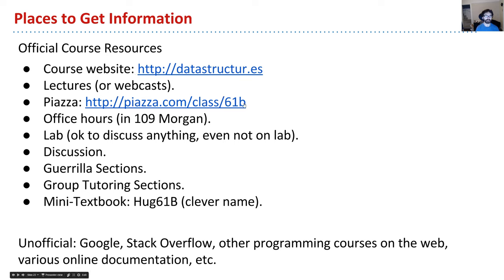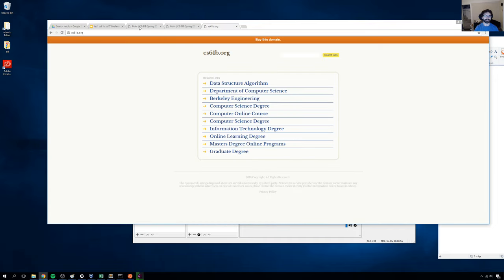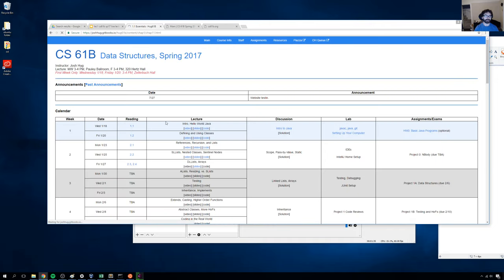We have a Piazza discussion forum, office hours in 109 Morgan, and lab and discussion sections. In addition to scheduled times, we also have guerrilla sections — special discussion sections that are mastery learning based, where you work in groups until everybody gets the problem. We'll have group tutoring sections for those who want extra help, 5-on-1 or even 1-on-1. There's also a little textbook called Hug61B for now, linked on the main page, with readings tailored to 61B.